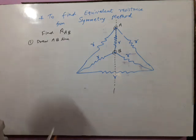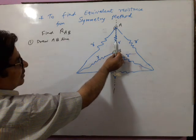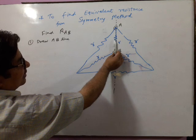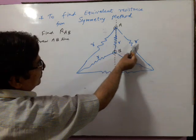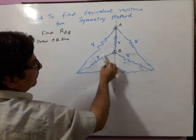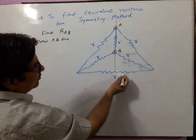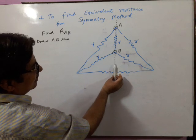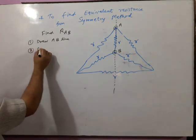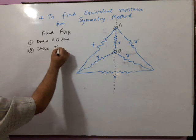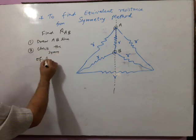Consider a mirror placed over here. Think the mirror is placed. Then you see the image of this resistance R, and this is divided into two parts: R/2 and R/2. So the image is visible. This is called point number 2: check the symmetry of the AB line.